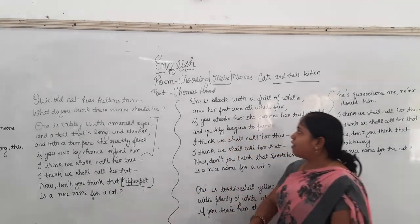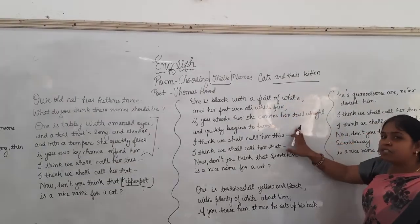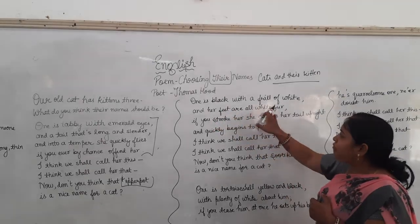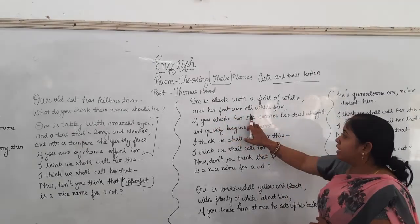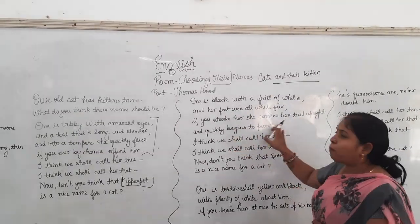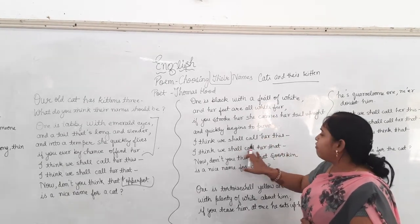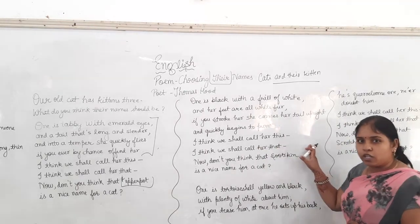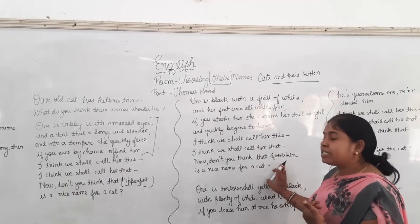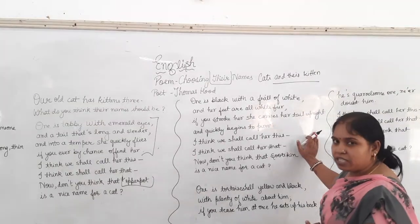Now come to the second stanza. Her feet are all white — these are the characteristics of the second kitten of the cat. Her feet are all white fur, and if you stalk her, she carries her tail upright and quickly begins to purr. So, 'I think we shall call her this, I think we shall call her that.' Don't you think that Snowcake is a nice name for a cat?